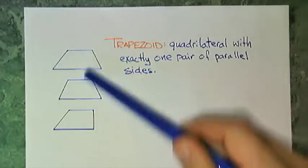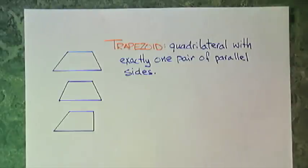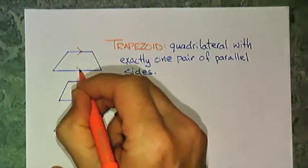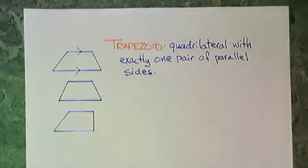I have drawn three quadrilaterals and none of which are a trapezoid yet. Don't fall into that trap. We need one pair of parallel sides so I need to mark my parallel sides as such. Now I have a trapezoid.